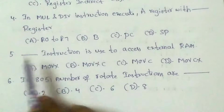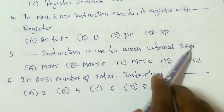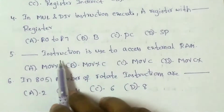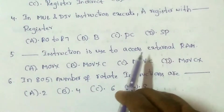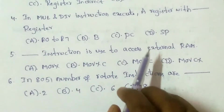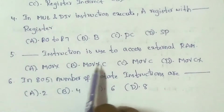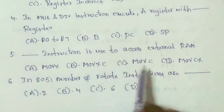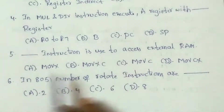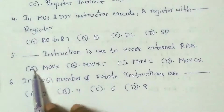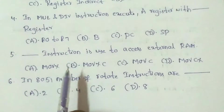Next question: Which instruction is used to access external RAM? Options: A) MOVX; B) MOVXC; C) MOVC; D) MOVCX. The answer is option A: MOVX. The MOVX instruction is used to access external RAM.